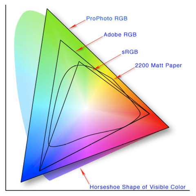CMYK uses subtractive color mixing used in the printing process, because it describes what kind of inks need to be applied so the light reflected from the substrate and through the inks produces a given color. One starts with a white substrate and uses ink to subtract color from white to create an image. CMYK stores ink values for cyan, magenta, yellow and black. There are many CMYK color spaces for different sets of inks, substrates, and press characteristics, which change the dot gain or transfer function for each ink and thus change the appearance.